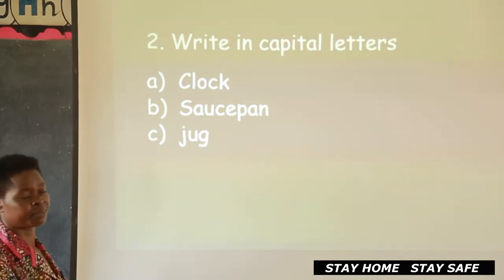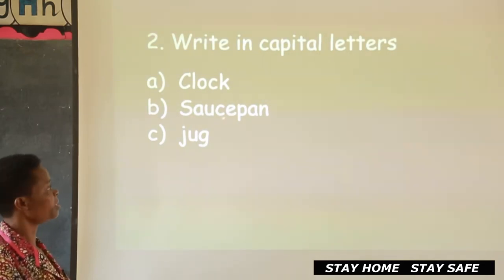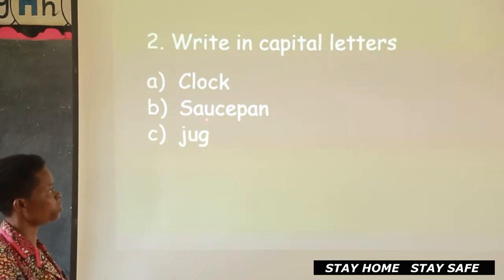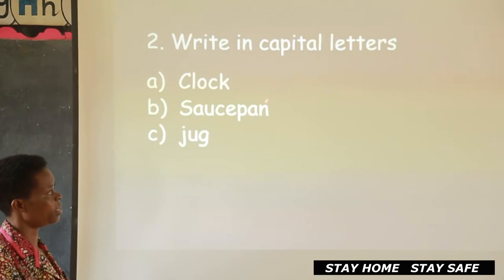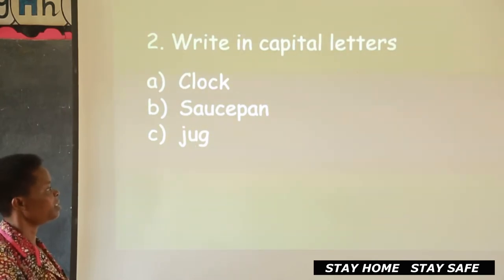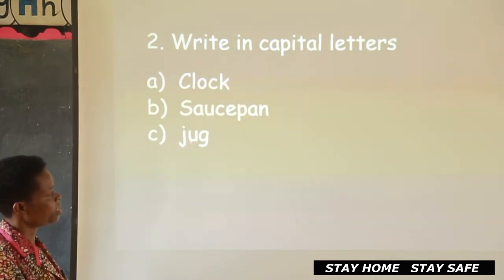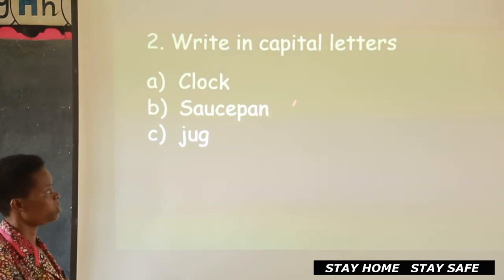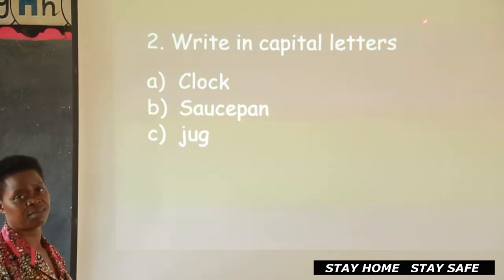Then we come to saucepan. These ones are small, so if you are changing, you write capital S, capital A, capital U, capital C, capital E, capital P, capital A, and capital N — there you have changed it to capital letters. Jug is in small. When you are writing in capital, you write capital J, capital U, and capital G. So that is the activity I left.